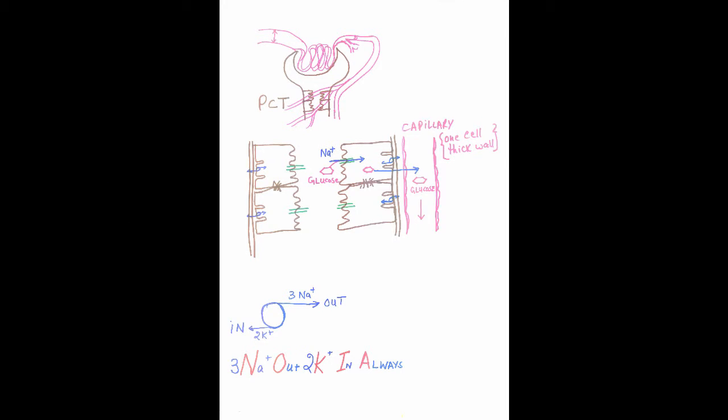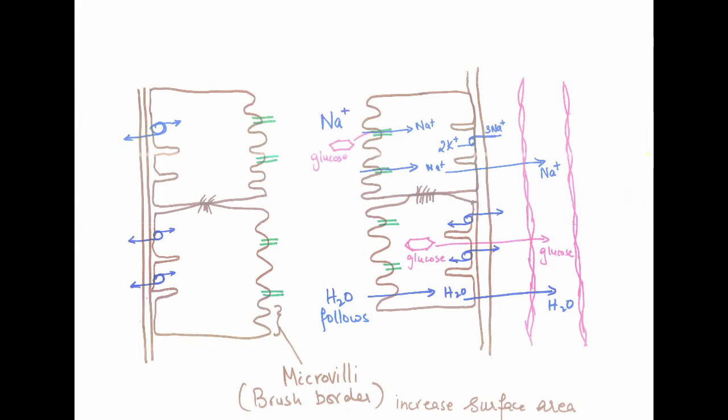The efferent arteriole then divides into capillaries, and these capillaries surround the PCT. Now on the basal side of these cells, there are sodium-potassium pumps. These sodium-potassium pumps are very important in pumping out three sodium ions out of the cell, and two potassium ions are pumped into the cell. This causes a decrease in concentration of sodium ions inside the cell.